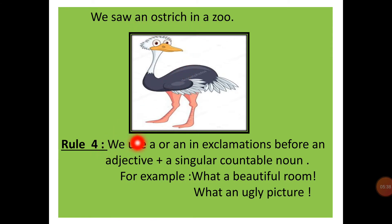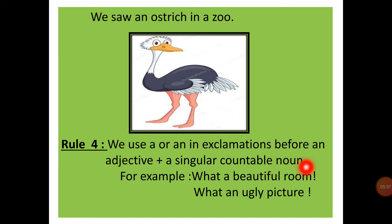Now the next rule: we use a or an in exclamations before an adjective plus a singular countable noun. Look at the sentence: 'What a beautiful room.' Here, beautiful is an adjective and room is a countable noun, that's why a comes: a beautiful room. 'What an ugly picture.' Here, ugly is an adjective and picture is a countable noun, that's why an comes before ugly picture.